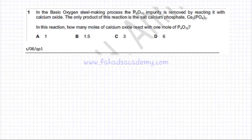The following question is about moles and balancing equations. The question states that in the basic oxygen steel making process, P4O10 impurity is removed by reacting it with calcium oxide.